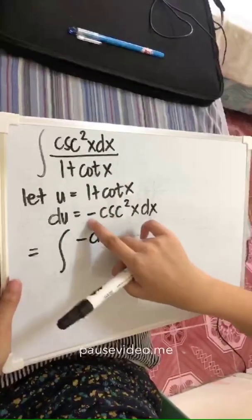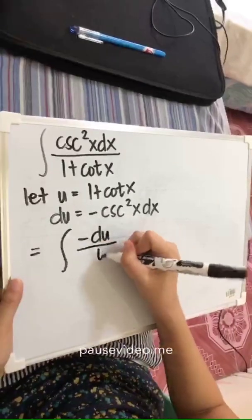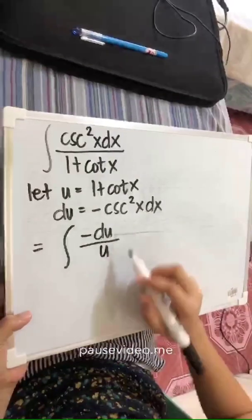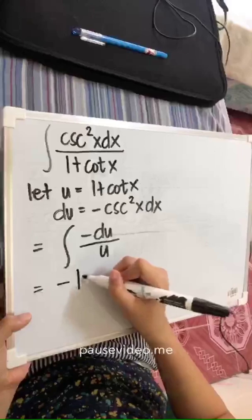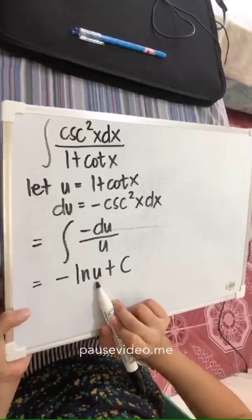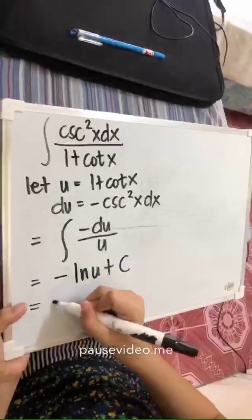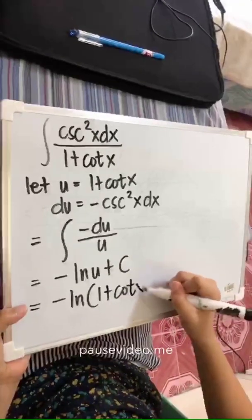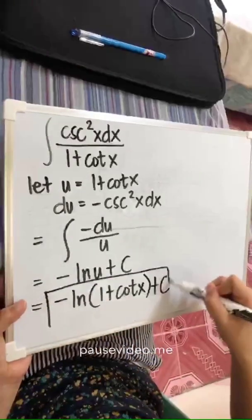The only difference is the negative sign, so we can write it as negative du over u. Integrating this, since the integral of du over u is ln u and it's negative, we get negative ln u plus c. Replacing u with its original value, we have negative ln(1 plus cos x) plus c. This is our final answer.